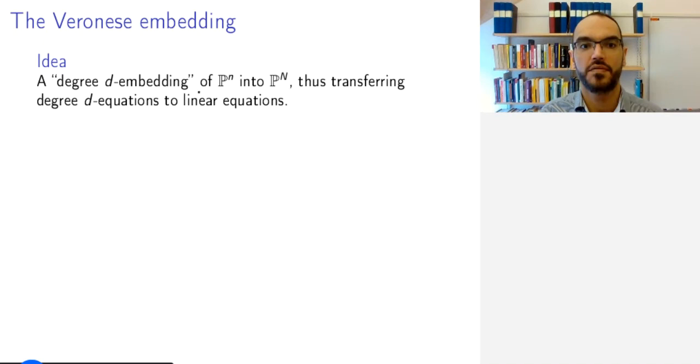The idea is that when we want to check something expressed by equations of degree d on P^n, after the Veronese embedding we will be able to transform these equations to equations of degree one, so linear equations on P^N and check them there.